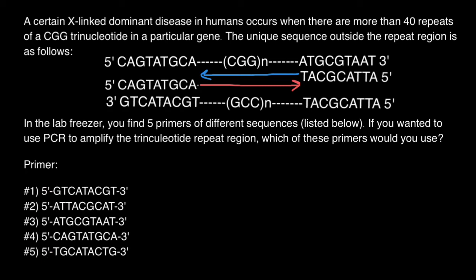Now we just have to find the correct answer. Here's a hint: we always list our primers from 5' to 3', even if it is the reverse primer — we never write it as 3' to 5'. Now let's find the forward primer. The sequence is 5'-CAG. Checking 5'-CAG against our choices, only number 4 meets our requirements for the forward primer and has the correct sequence.